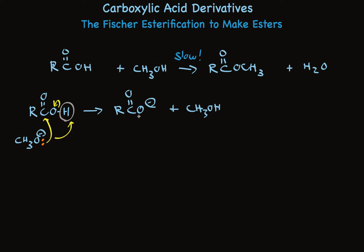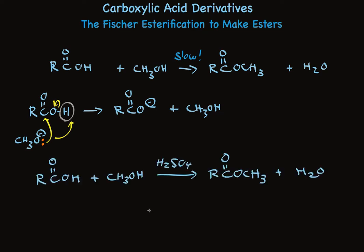This is known as Fischer esterification. It's widely used and extremely effective. Very high yields, essentially 100%, can be achieved by using an excess of the alcohol to push the equilibrium to the right. Like other nucleophilic additions to carbonyl, this is a reversible reaction and the conditions establish an equilibrium, but that equilibrium can be pushed entirely to the right.